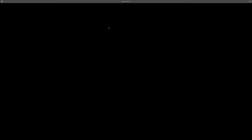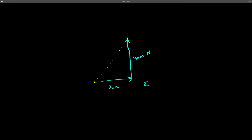Now say we have two different vectors: a vector going east and a vector going north. I marched 20 meters east, then I decided to go 40 meters north. What if I wanted to calculate the displacement? Displacement is when we take two points and draw a straight line from the start to the finish — we don't trace the path traveled, we just go straight from the start point to the end point. So this straight line would be the displacement.